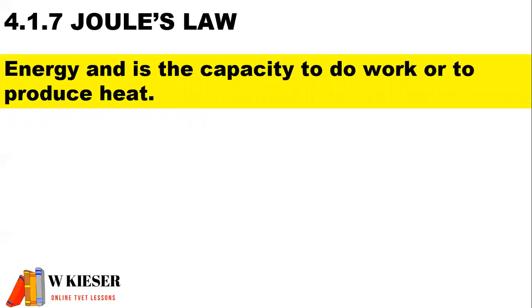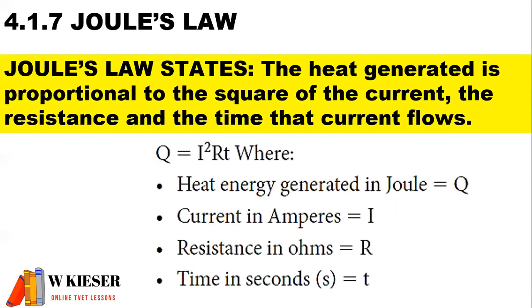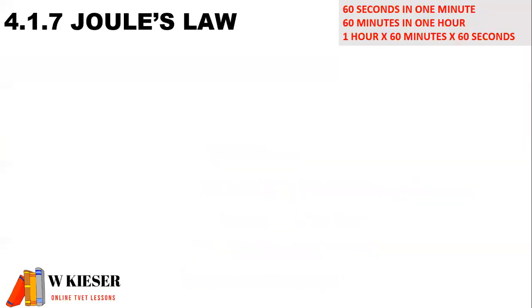For the next section on heat and Joule's Law: to define energy, energy is the capacity to do work or to produce heat. To state Joule's Law, we use the formula Q = I²RT, where Q is the heat generated in joules, I is the current in amperes, R is the resistance in ohms, and T is time in seconds. The heat generated is proportional to the square of the current, the resistance, and the time the current flows. Remember: there are 60 seconds in one minute, 60 minutes in one hour, and to convert hours into seconds we multiply by 60 minutes and 60 seconds.